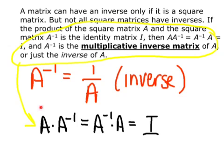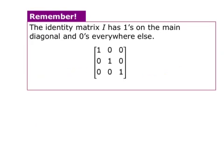If A times the inverse of A equals I, or the inverse of A times A equals I, then they are inverses of each other. It's not as complicated as it seems. The identity matrix I has 1s in the diagonal and 0s everywhere else. So if multiplying A and A to the negative 1 together gives you the identity matrix, then yes, they are inverses of each other.